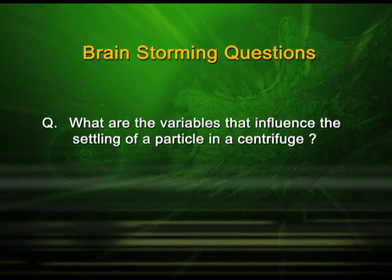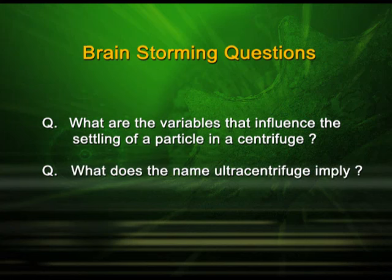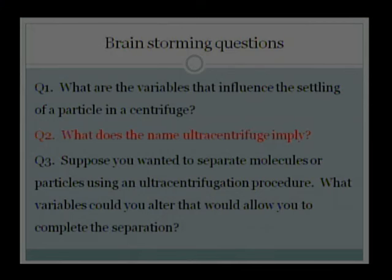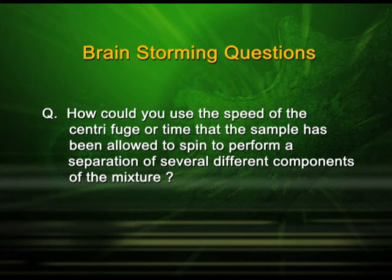Today we have discussed in length about centrifuge, different types of centrifugal separations, and the different types of centrifuge. Before the next episode, here are some brainstorming questions: First, what are the variables that influence the settling of a particle in a centrifuge? Second, what does the name ultra centrifuge imply? Third, if you wanted to separate molecules using an ultra centrifugation procedure, what variables could you alter to complete the separation? Fourth, how could you use the speed of the centrifuge or time to perform a separation of several different components of a mixture?